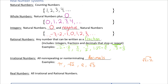Each number system has a symbol that looks like a fancy letter. Natural numbers use a fancy N with two lines on the left stem. Whole numbers use a fancy W with an extra line. Integers use the letter Z — with an extra line in the middle — and I know you're wondering why Z; it just can't be I because I is used for irrationals.